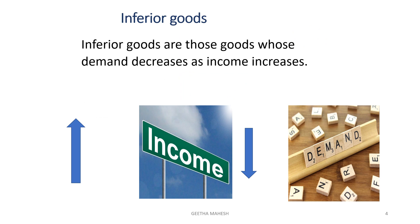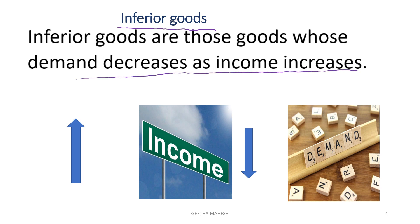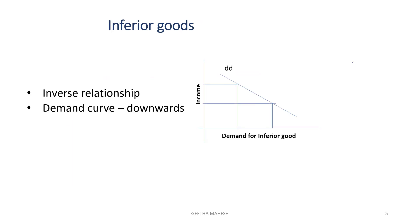Now let us discuss what are inferior goods. Inferior goods are those goods whose demand decreases as income of the consumer increases, so there is an inverse relationship between income of the consumer and demand for inferior goods. This inverse relationship means the income demand curve for inferior goods has a downward slope, that is a negative slope.